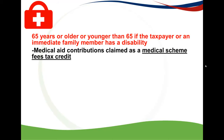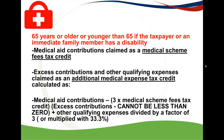There are still two types of tax credits: the medical schemes fees tax credit and the additional medical expense tax credit. The medical schemes fees tax credit is calculated exactly the same in Part 2 as it was in Part 1, so we'll look at that again just to recap. The additional medical expense tax credit, however, is calculated a little bit differently.